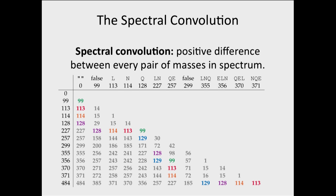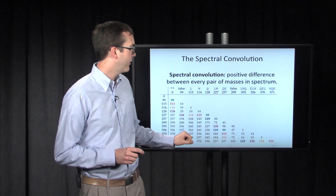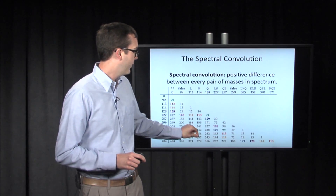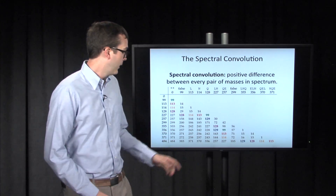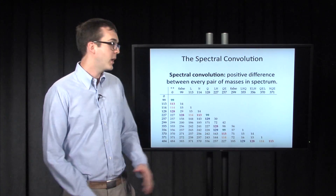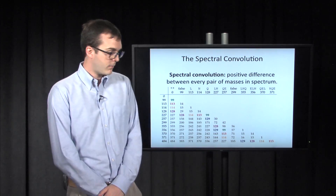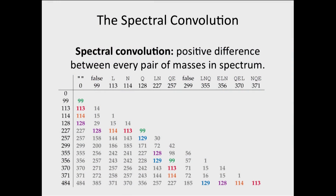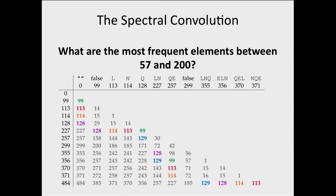Here is the same spectrum we had. We represent the masses along each axis and go through and subtract every pair. For example, 227 is the mass of LN and 370 is another detected mass; when we subtract them, we get 143. We do this for every pair and form a table. The reason certain masses are highlighted is that we want to ask: what are the most frequent elements between 57 and 200? Because with E, we picked it up in three different places, so there's a good chance that the most frequent elements will give us the amino acids.